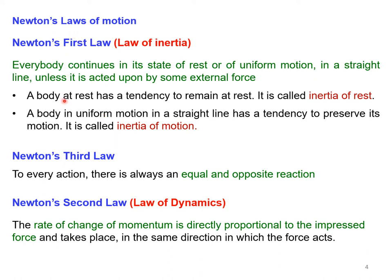A body at rest has a tendency to remain at rest — this is called inertia of rest. A body in uniform motion in a straight line has a tendency to preserve its motion — this is called inertia of motion. Newton's first law addresses both bodies at rest and bodies in motion: without external force, a resting body stays at rest (inertia of rest) and a moving body preserves its motion (inertia of motion).